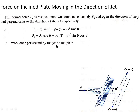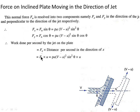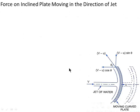Work done per second by the jet on the plate is Fx into distance per second in the direction of x, which equals Fx into U. Putting the value of Fx, work done equals rho A (V minus U)² sin²theta into U. The unit of this work done is newton-meter per second.